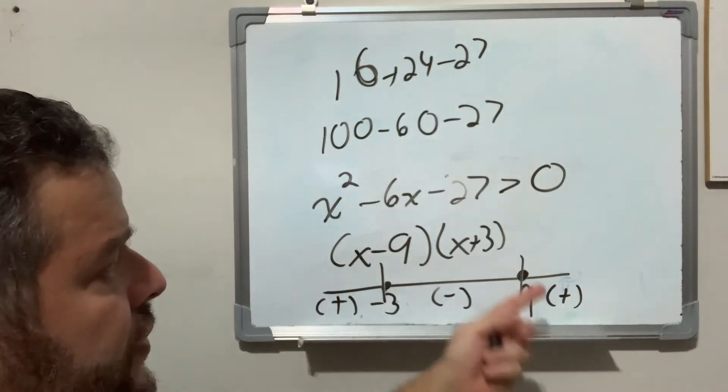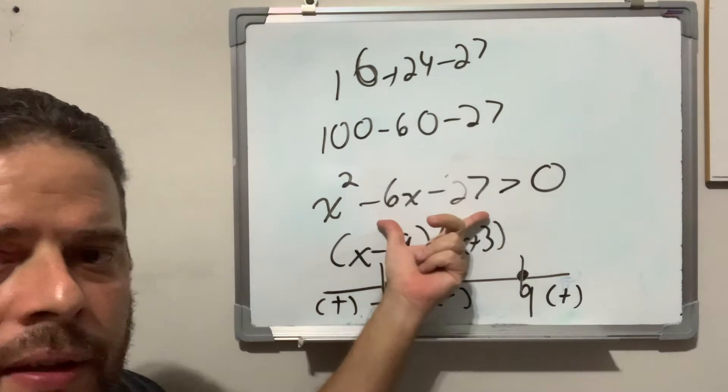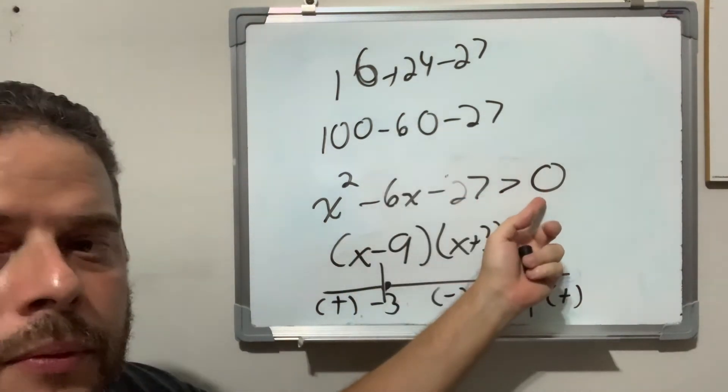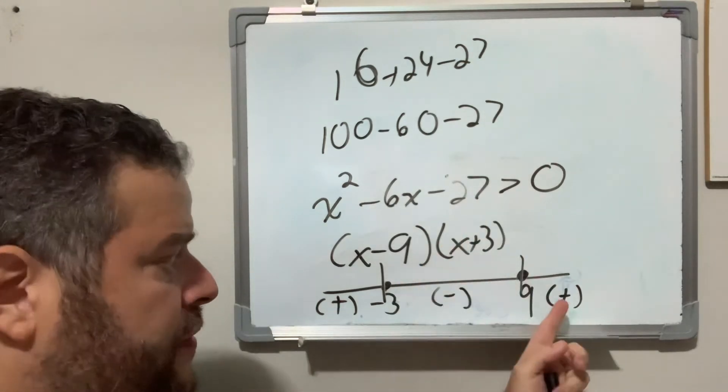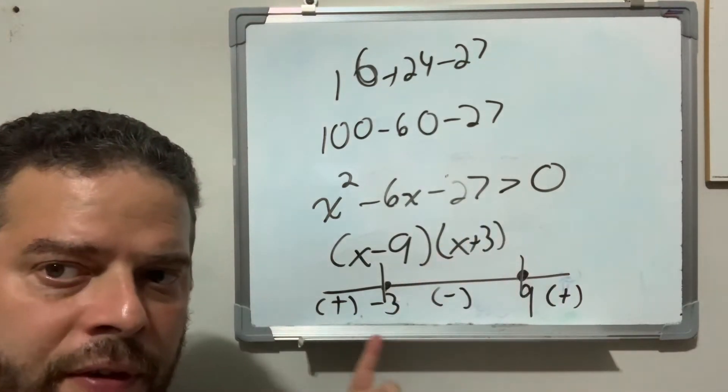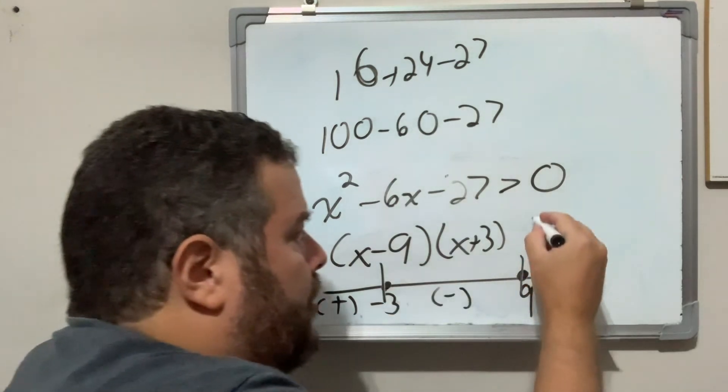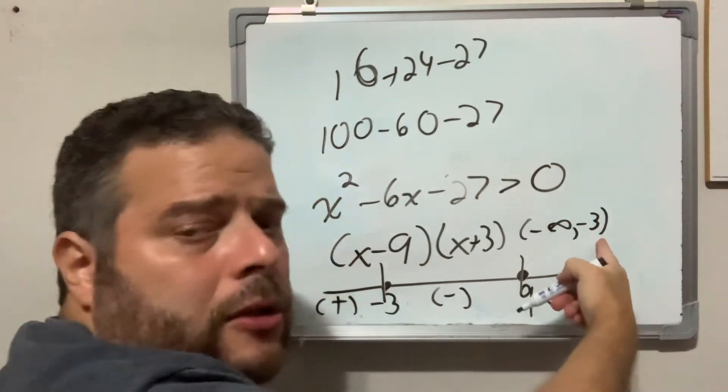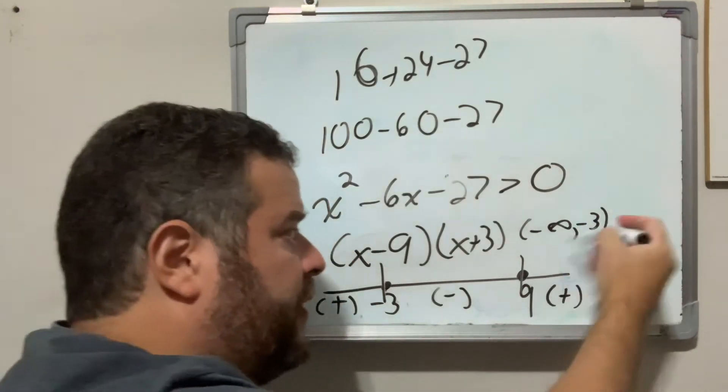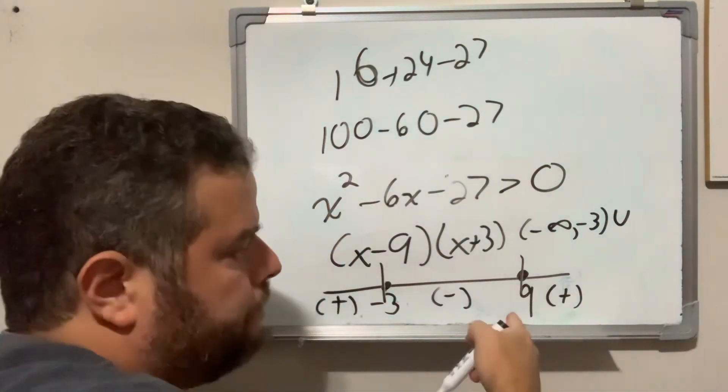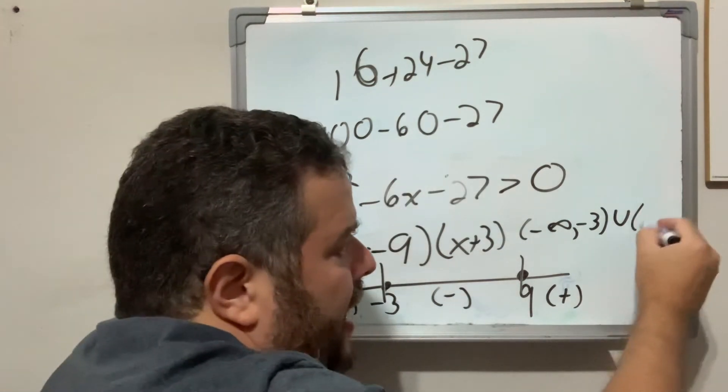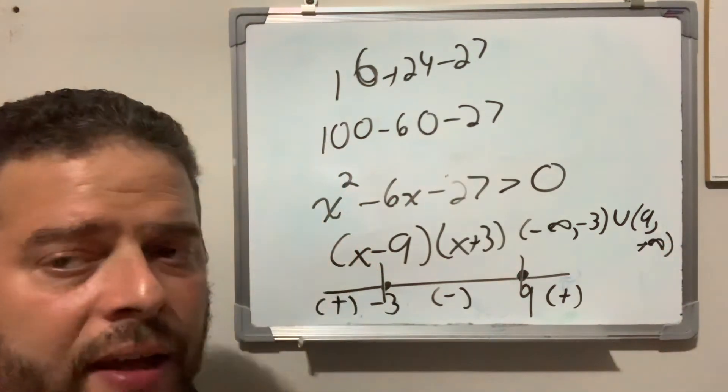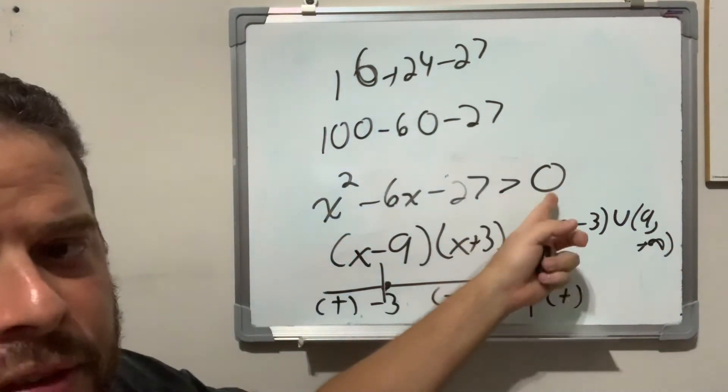And now, after you have your signs, you look at the inequality. Since this states that it has to be greater than zero, the positive numbers are greater than zero. So, in this case, the answer would be from negative infinity to negative 3, not including negative 3, so having parentheses, union 9, not including 9, to positive infinity, and you're done. Again, this is because this is greater than zero.